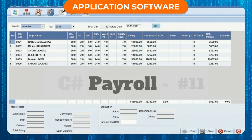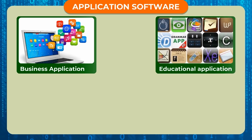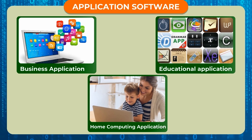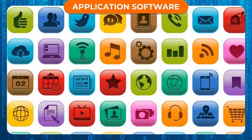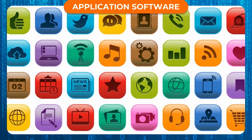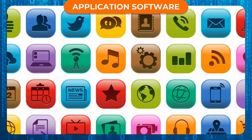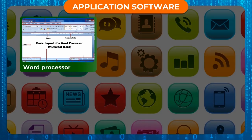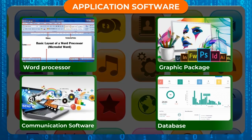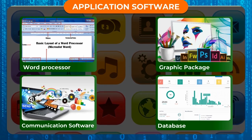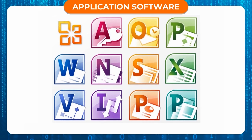Other examples of Specialized Application Software include Business Application Packages, Educational Application Packages, and Home Computing Application Software. Integrated Packages include several application programs combined in one suite. A typical integrated package contains a word processor, a graphic package, a database, and communication software. There are a number of advantages to buying an integrated package rather than separate packages.